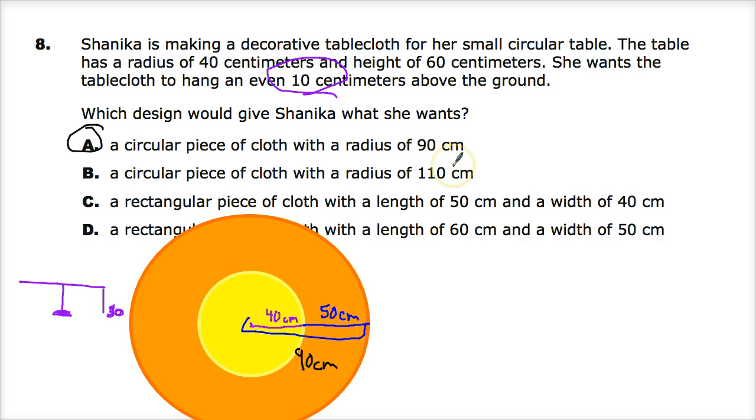B is 110 centimeters. I think that's just adding all the numbers together. And this person says that they need a rectangular piece of cloth. But, she wants it to hang evenly at 10 centimeters.